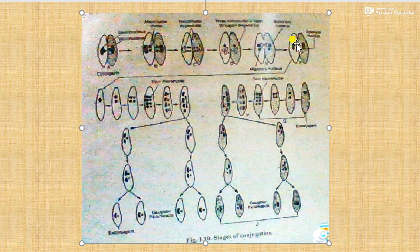The zygote nucleus is termed amphimixis. The conjugates now separate - one is called an ex-conjugant and the other is another ex-conjugant.